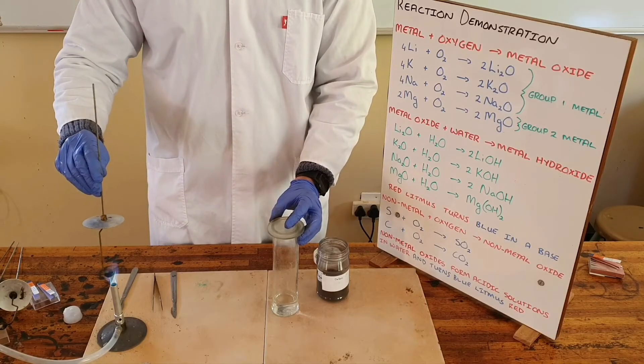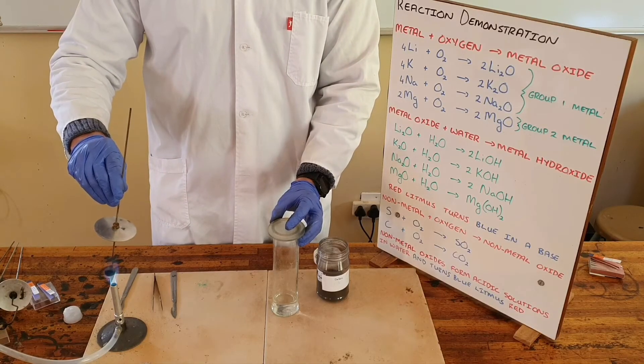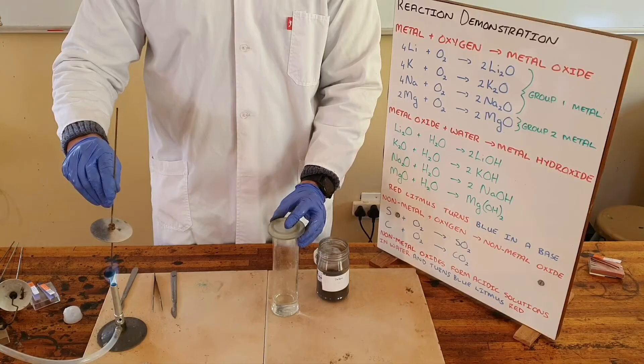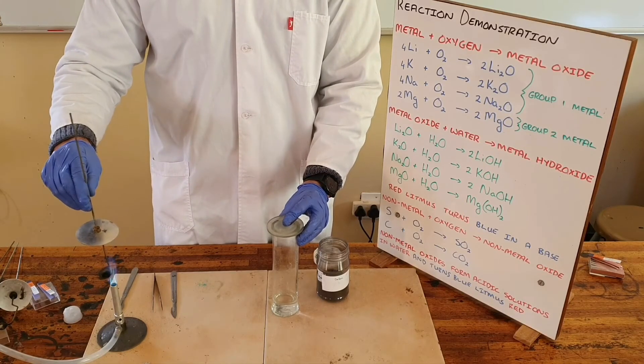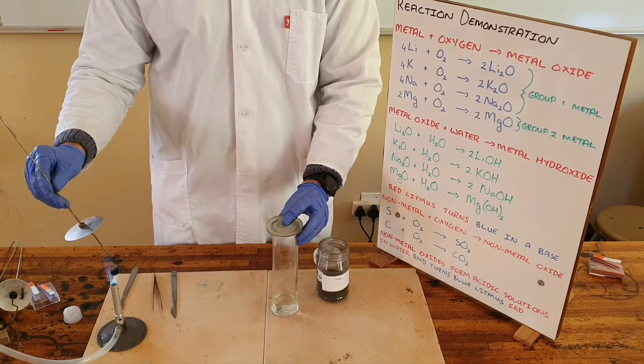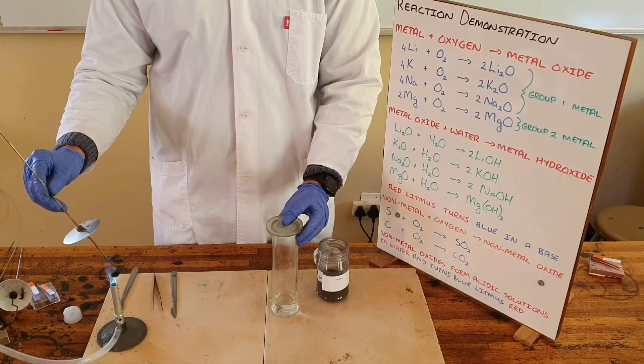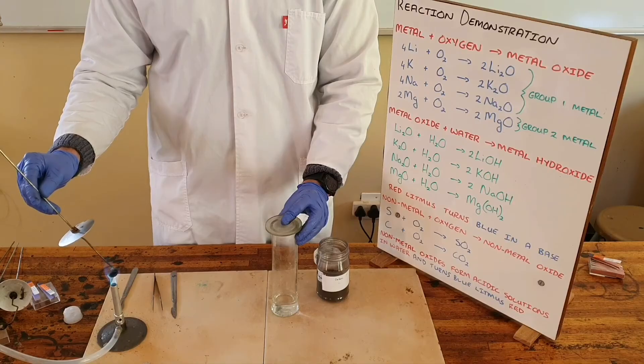But what we can show you hopefully is that the combustion of carbon is going to produce some carbon dioxide. Carbon dioxide we know, since it's a non-metal oxide, when combined with water is going to produce an acidic solution, that being carbonic acid.